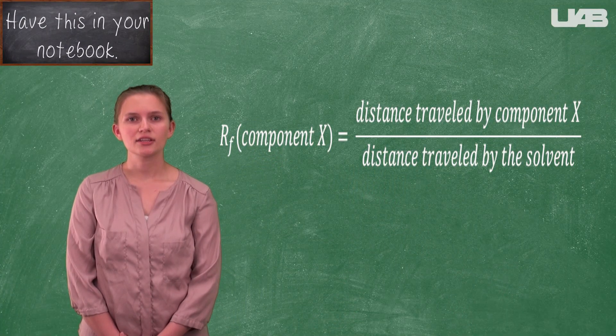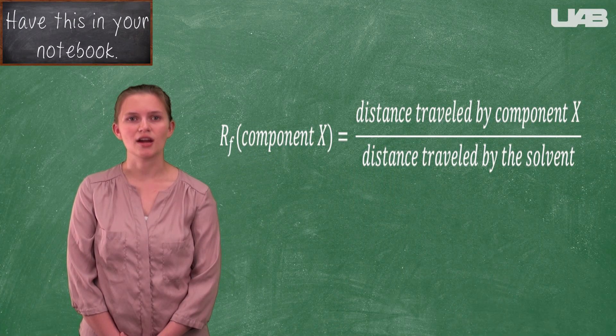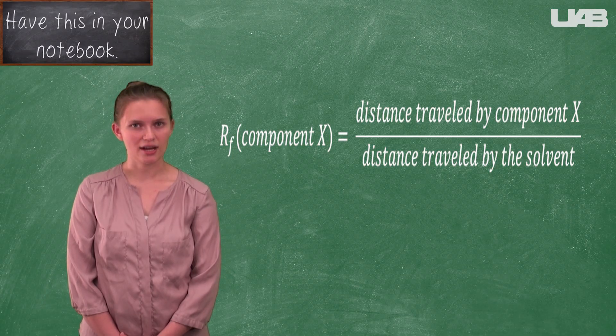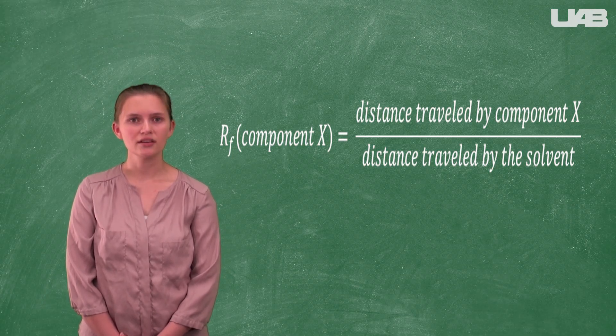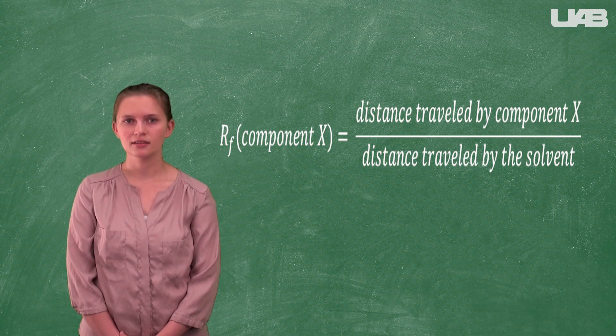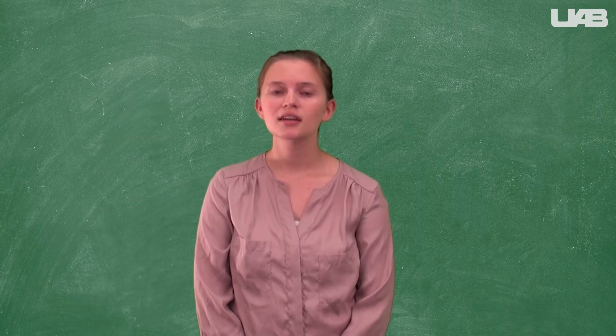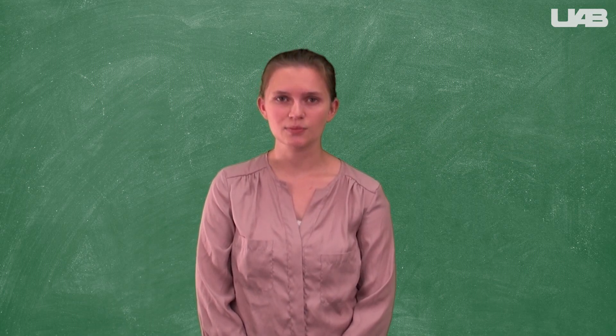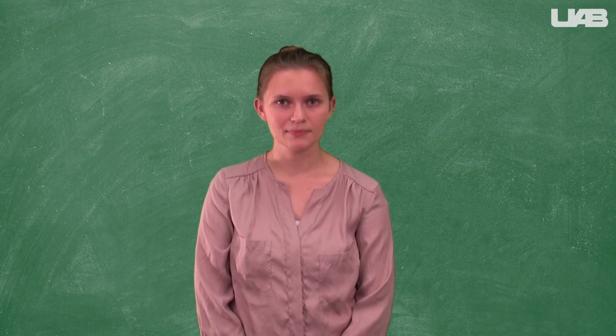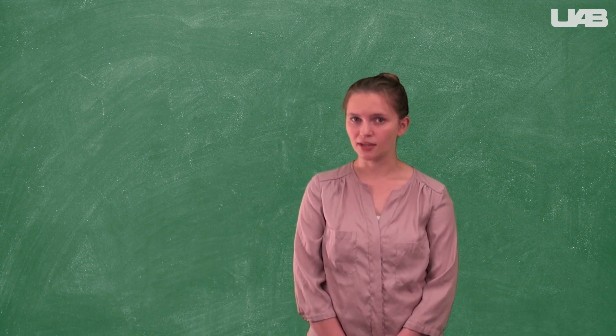The RF value can be calculated by dividing the distance the spot traveled by the distance the solvent traveled. You should calculate one RF value for each known dye. Your unknown contains two dyes and will therefore have two spots, so you should calculate two separate RF values for your unknown.